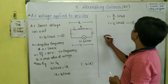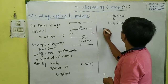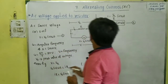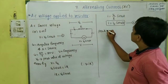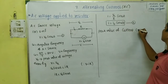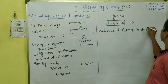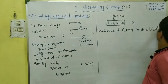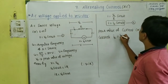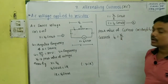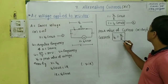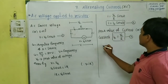In this equation, the peak value of current — also called the maximum value or amplitude of current — is I₀. It is equal to V₀ divided by R. Peak value of voltage divided by resistance gives the peak value of current. This is equation 3.